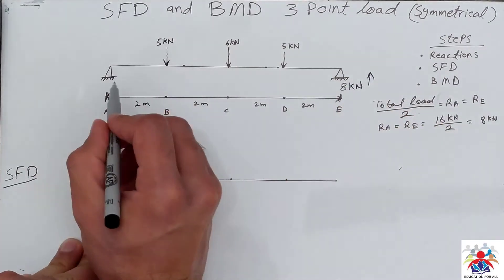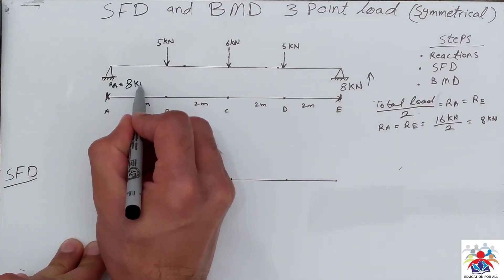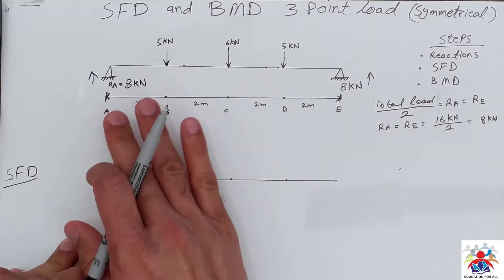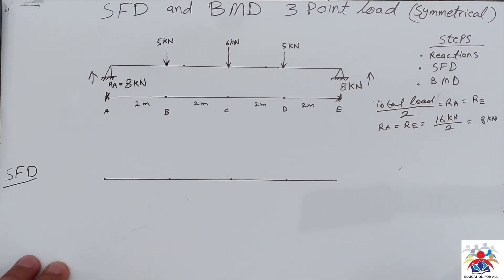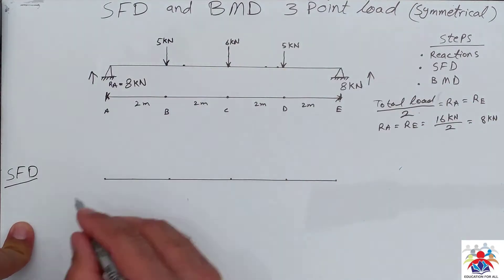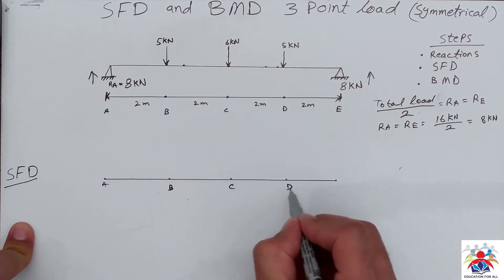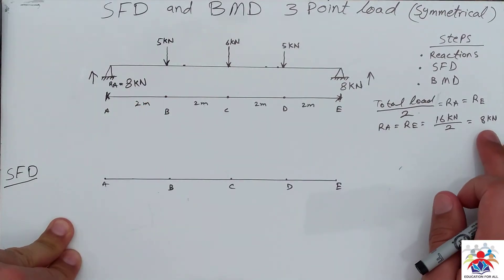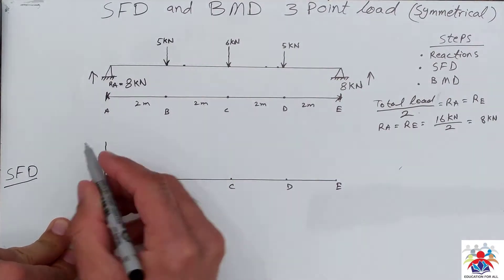At RA we also have 8 kilonewtons, both acting upwards. So we have 8 kilonewtons at point A and at point E, both upwards. Now we can draw the shear force diagram based on these numbers. This is our beam with points A, B, C, D, and E. At point A we have 8 kilonewtons going upwards.